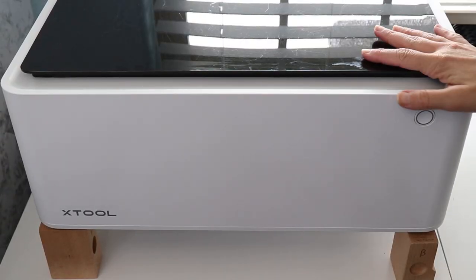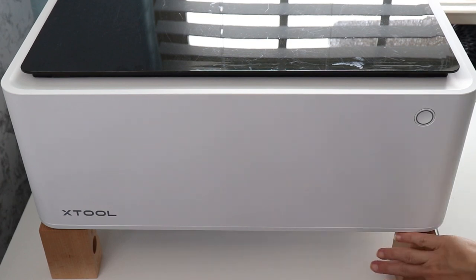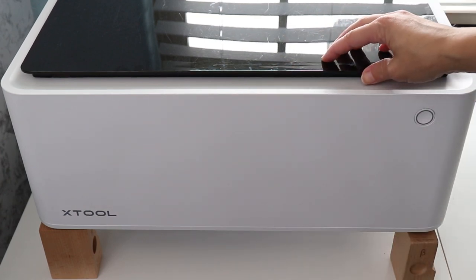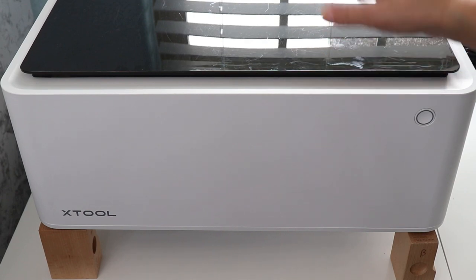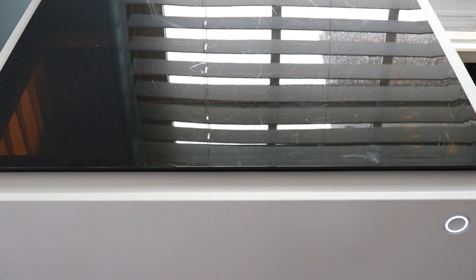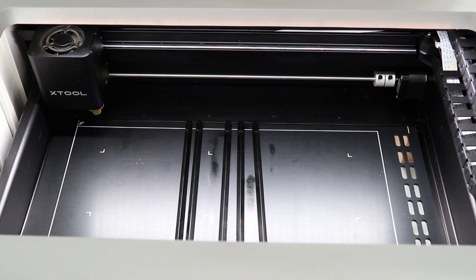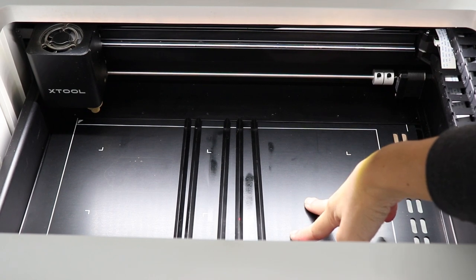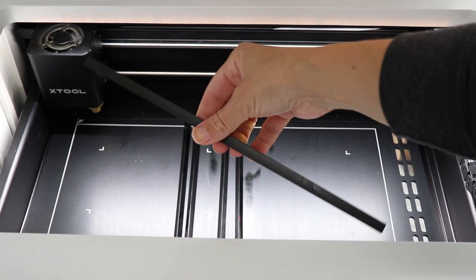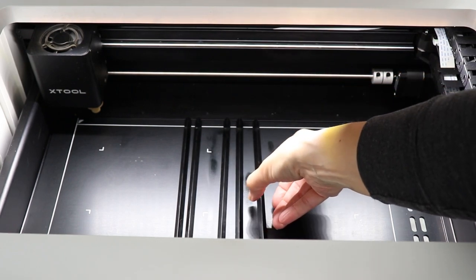I'm going to be using the Xtool M1 to cut these earrings out. Now it is up on risers today which you can actually leave it up on risers as long as the base is still attached on the inside of the machine. Inside the base is firmly attached and I am using triangular prisms inside to raise my wood up. This is going to help with the cutting.